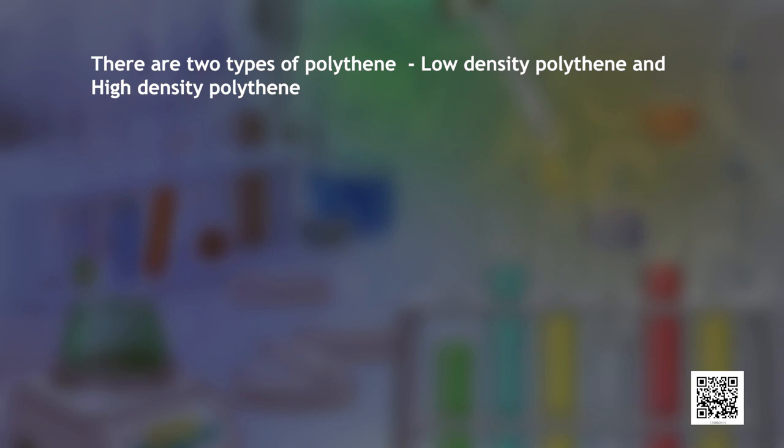Now we will learn about mode of preparation, characteristics and properties of some important addition polymers. An addition polymer that is used extensively in our daily life is polythene. We will first talk about the properties of polythene, and there are two types: low density polythene and high density polythene.